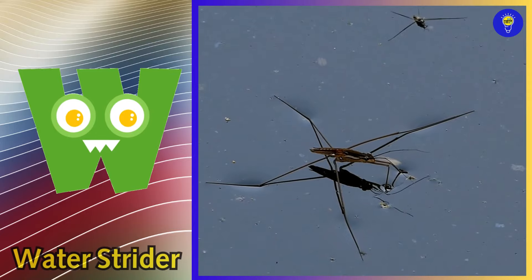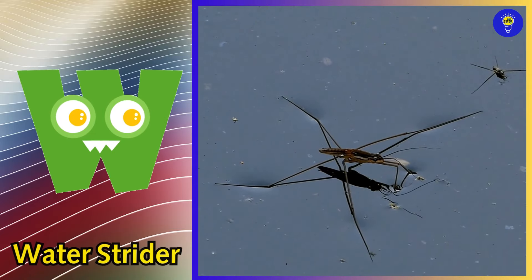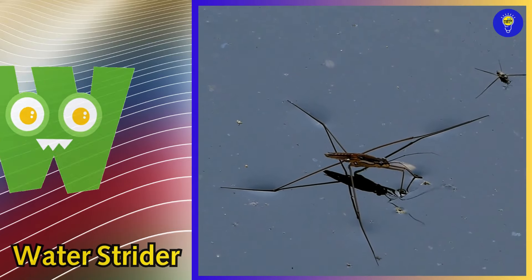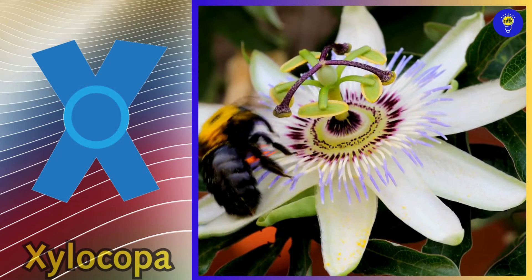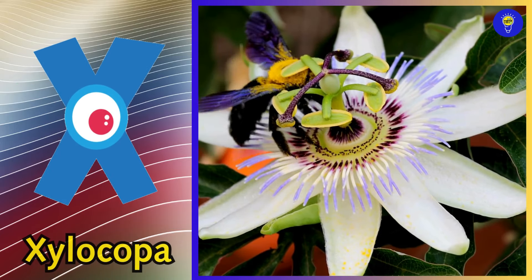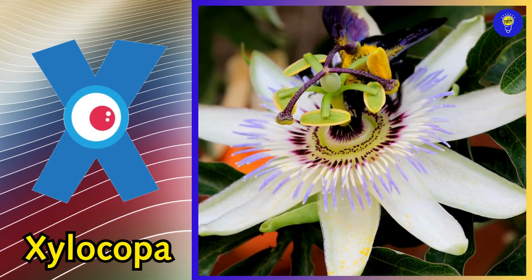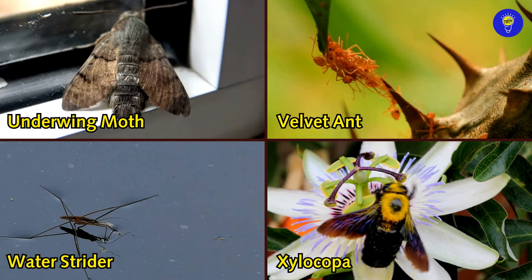W is for water strider. W, w, water strider. X is for xylocopa. X, x, xylocopa.